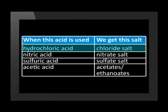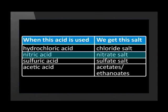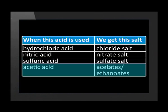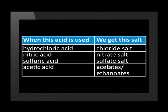Every acid forms a different type of salt. Hydrochloric acid gives us a chloride salt. Nitric acid gives us a nitrate salt. Sulfuric acid gives us a sulfate salt. Acetic acid, or vinegar, gives us an acetate salt. Acetic acid is also called ethanoic acid, so the salt is called an ethanoate.